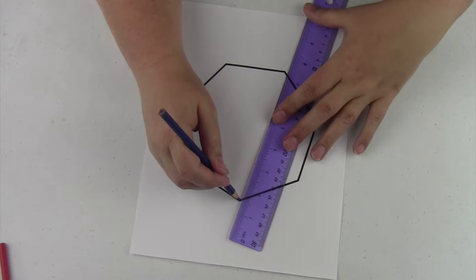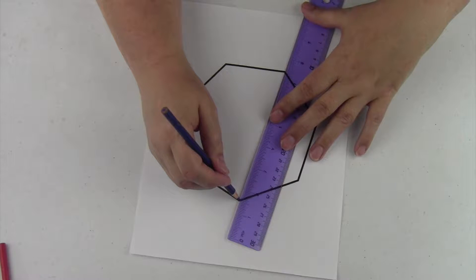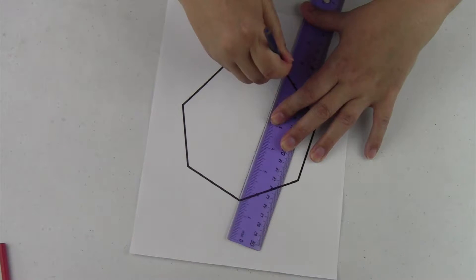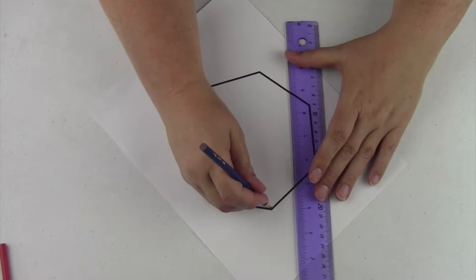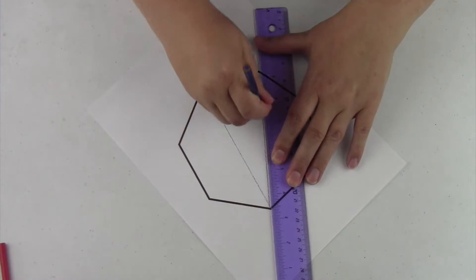So you line up your straight edge with the two angles, and we're going to go around this heptagon seven times.